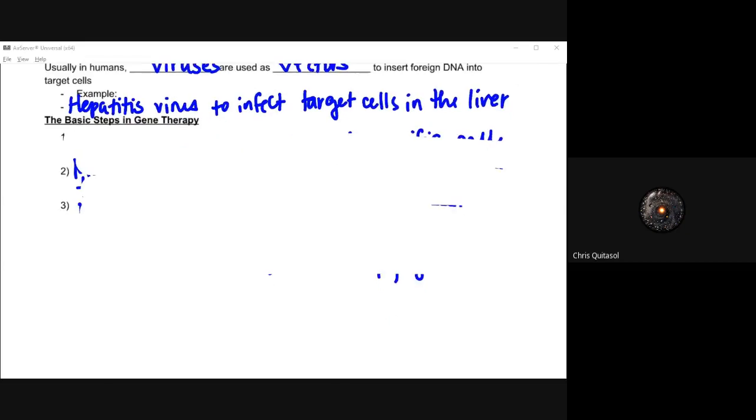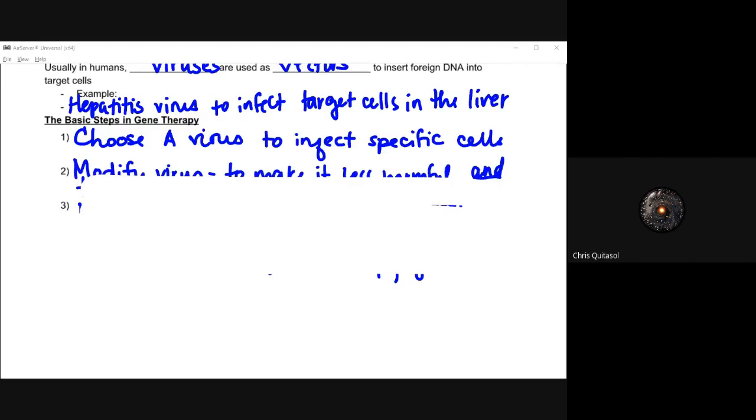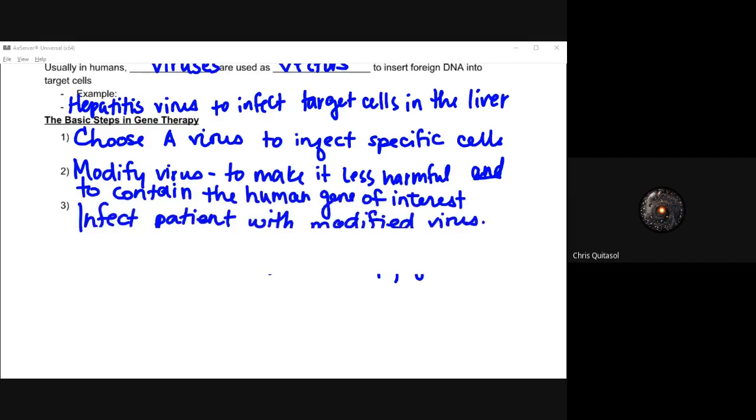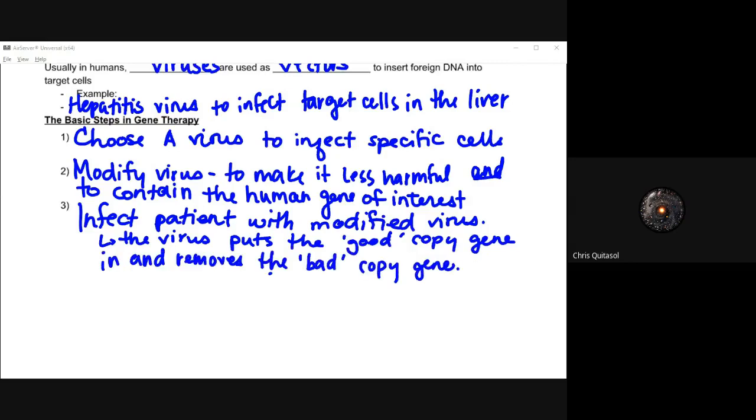The three main steps for gene therapy involve: choosing a virus to inject specific cells with, modifying that virus to make it less harmful but also to contain that human gene of interest—whatever it is that you're looking to change the genome of that specific cell—and then infecting that patient with the modified viruses. The virus then puts the good copy of genetic information in and takes out that bad copy, so to speak.